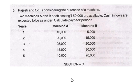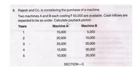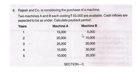A radiation company is considering the purchase of machines. Two machines, A and B, each costing rupees 50,000 are available. Cash inflows expected: Machine A — 15,000; 20,000; 25,000; 15,000; 10,000. Machine B — 5,000; 15,000; 20,000; 30,000; 20,000. Cash outflow is 50,000 for both machines.